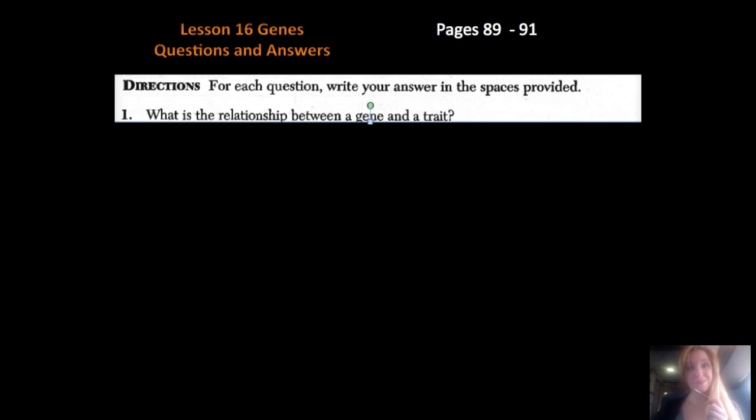Hi, it's Ms. Sherbin from Amtrak, again going to Boston. This is Lesson 16, Genes Questions and Answers, pages 89 through 91. Remember, you can pause and rewind at any point, and look for the secret word. You don't know when it's gonna come, so you need to listen.